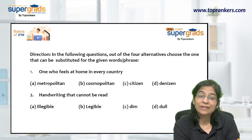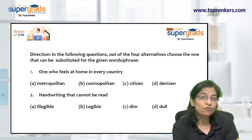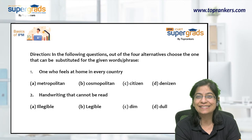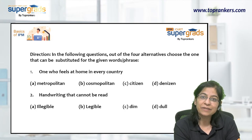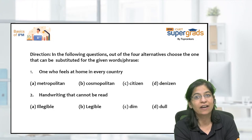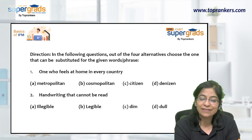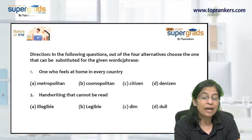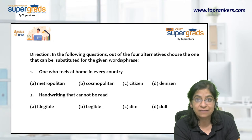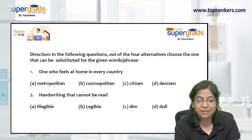Citizen refers to someone who legally and officially resides in a place. Denizen refers to someone who is native to a particular place — a native of that area. So among the four options, the answer to 'one who feels at home in every country' is cosmopolitan.